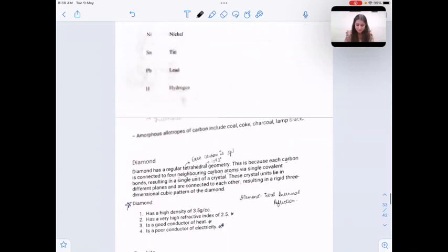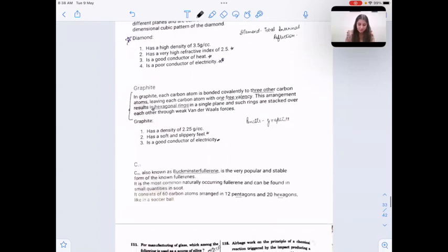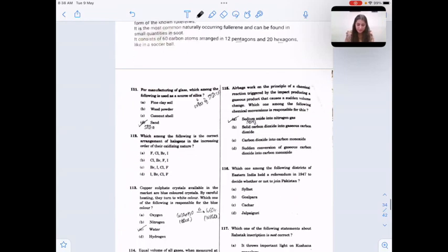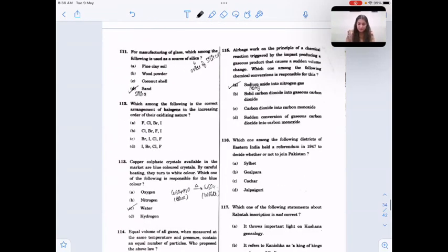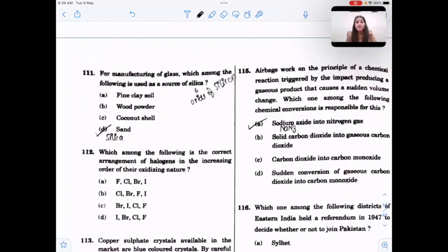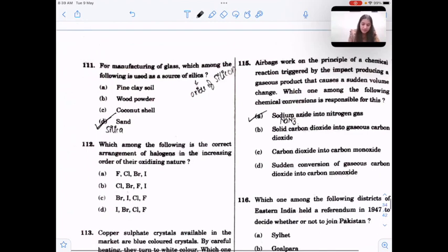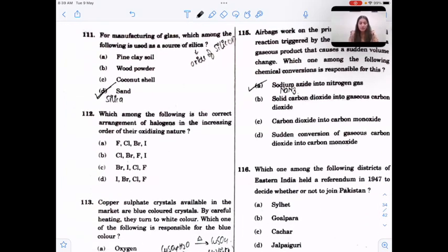For the manufacturing of glass, which of the following is used as source of silica? Silica is an oxide of silicon, SiO2, and the source of silica is silica sand, option D. Next question asks about the correct arrangement of oxidizing nature. Fluorine has the most oxidizing power, followed by chlorine, bromine, and iodine. So increasing order is iodine, bromine, chlorine, and fluorine.